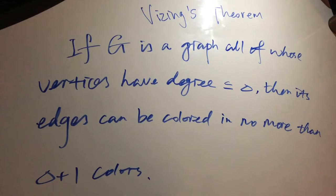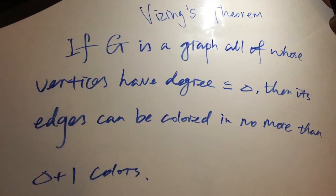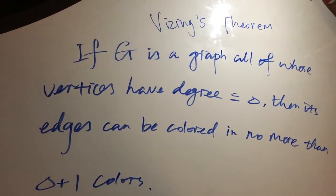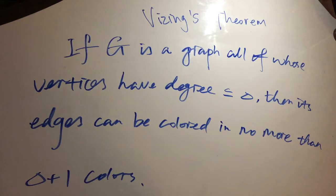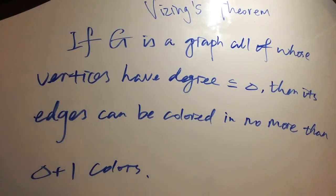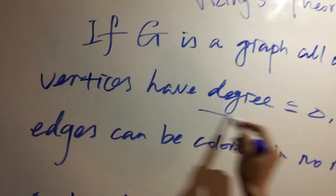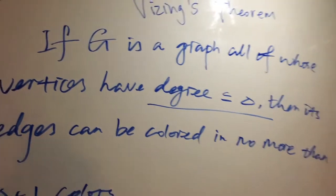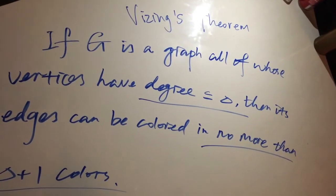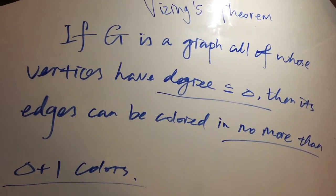After discussing the basic terminologies of Vizing's theorem, we are proceeding to its proof. Let's take a look at the definition: if G is a graph all of whose vertices have degree smaller or equal to delta, then its edges can be colored in no more than delta plus one colors. We have two very important things: degree smaller or equal to delta, and no more than delta plus one colors.